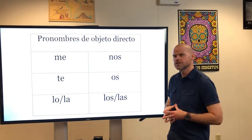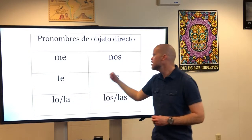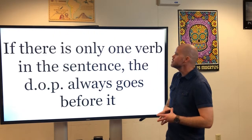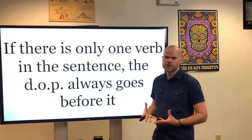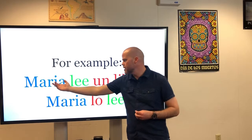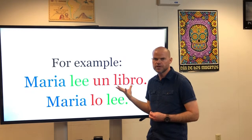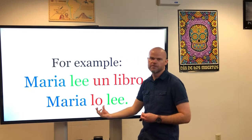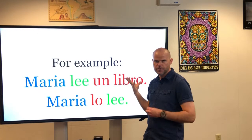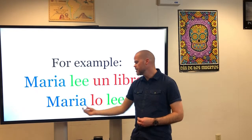The direct object pronouns in Spanish are: me, te, lo, la, nos, os, los, and las. If there's only one verb in the sentence, the direct object pronoun always goes before the conjugated verb. For example, Maria lee un libro — Maria reads a book. We replace un libro with the direct object pronoun lo, because it's singular and masculine, and put it before the conjugated verb. So Maria lo lee — Maria reads it. Quite literally in Spanish: Maria it, she reads.